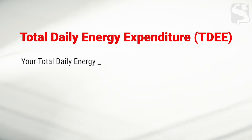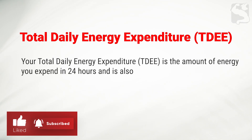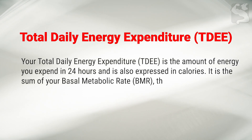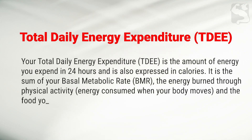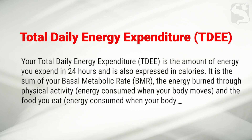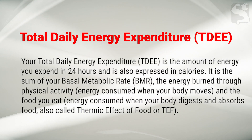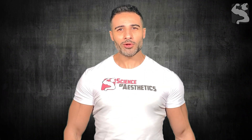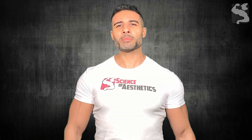Your total daily energy expenditure (TDEE) is the amount of energy you expend in 24 hours, also expressed in calories. It is the sum of your basal metabolic rate, the energy burned through physical activity, and the energy consumed when your body digests and absorbs food — also called the thermic effect of food, or TEF. Calculating your TDEE has become very easy and straightforward thanks to research.